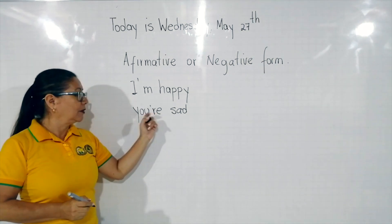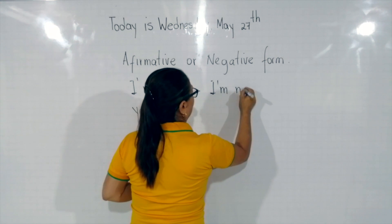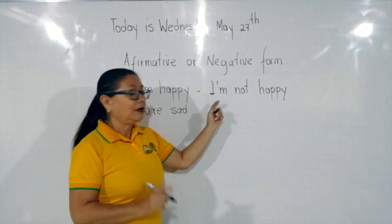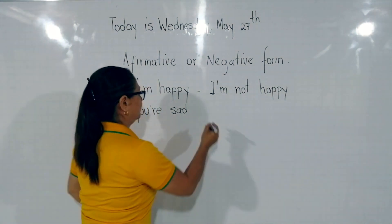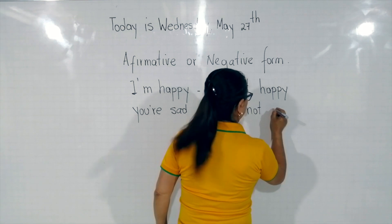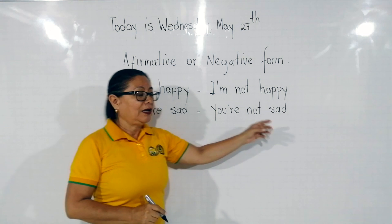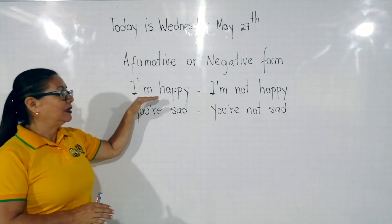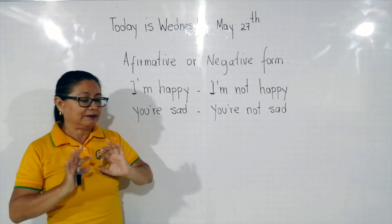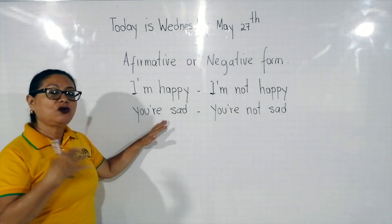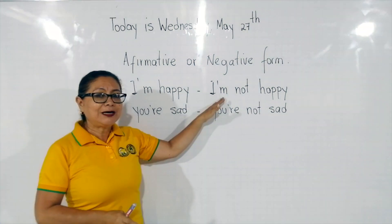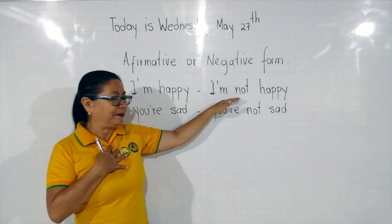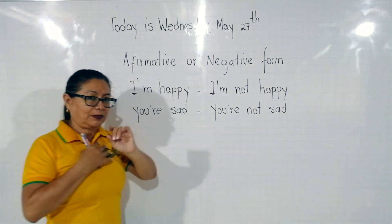Affirmative form: 'You're sad.' Negative form: 'I'm not happy.' Repeat: I'm not happy. 'You're not happy.' 'You're not sad.' En esta oración estamos afirmando que estamos felices — 'I'm happy, you're sad' — afirmando que yo estoy feliz y tú estás triste. En esta oración estamos expresando que yo no estoy feliz — 'I'm not happy' — y que tú no estás triste.